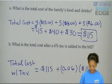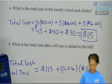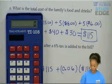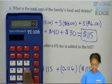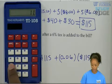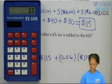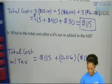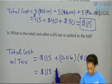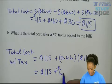That will give you the total cost including the tax. So let's figure out what 6% of the $115 is. 0.06 times $115.00. That gives us $6.90. So this would be $115 plus $6.90.